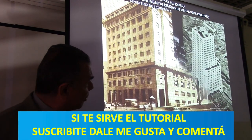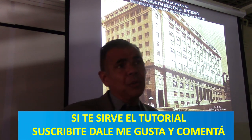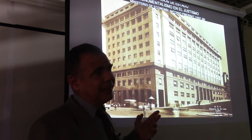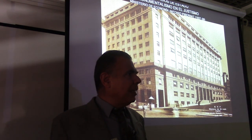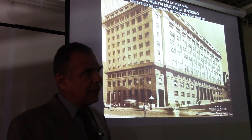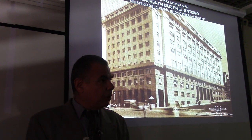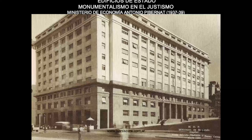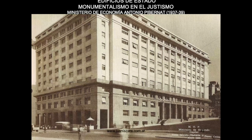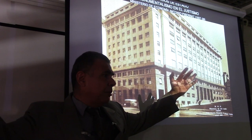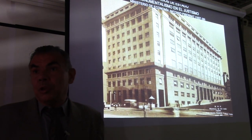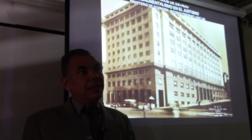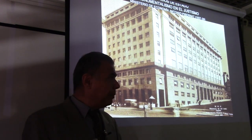El monumentalismo en la obra pública va a tener una etapa historicista — el palazzo renacentista — que mejor viene a cuento en los grandes ministerios de la época del New Deal argentino, que es la época del justismo, el presidente Agustín P. Justo, injustamente olvidado, que fue responsable de gran parte de la obra pública de nuestro país. Hace poco le cambiaron el nombre a la plaza Agustín P. Justo para poner otro monumento de Perón, frente a Aduana en Paseo Colón, que era la plaza que lo homenajeaba.